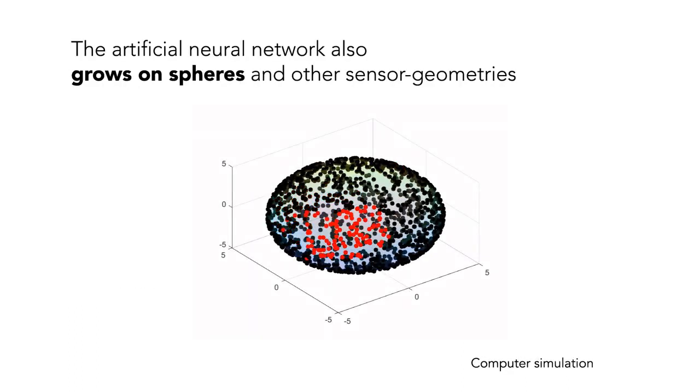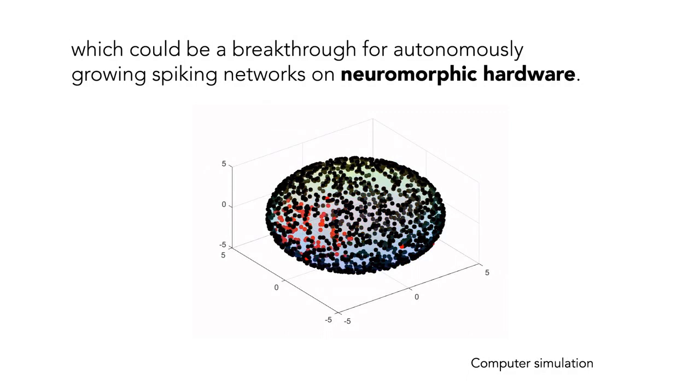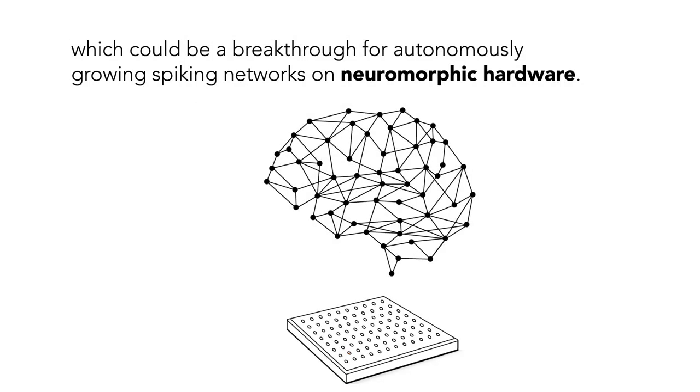The artificial neural network also grows on spheres and other sensor geometries, which could be a breakthrough for autonomously growing spiking networks on neuromorphic hardware.